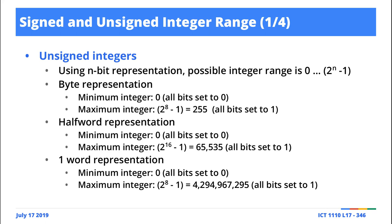If you're given a four-bit representation, the range of numbers you'll be working with is zero to two to the power four minus one, which is zero all the way up to fifteen. This makes sense. And it doesn't matter which bit representation you're using — if you're using byte representation, which is eight bits, same formula holds: two to the power eight minus one, which is zero up to 255. Half-word, 16-bit representation, is zero up to 65,535.